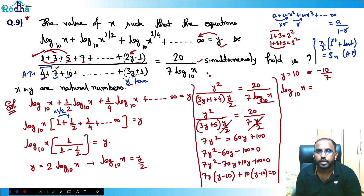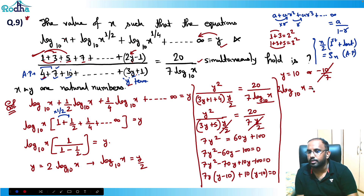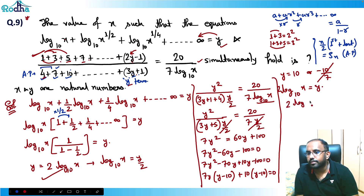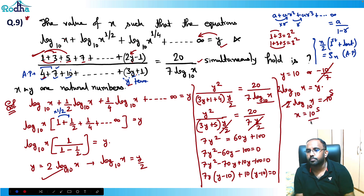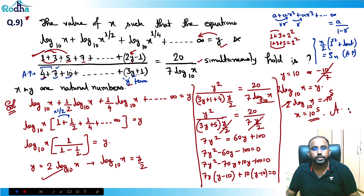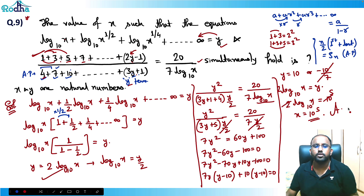y cannot be negative because all the terms in the original series are positive values. Also, the number of terms (2y - 1) would be negative if y is negative, which is not valid. So y = 10. Since y = 2·log x base 10, we get log x base 10 = 5, therefore x = 10^5. That's the answer!